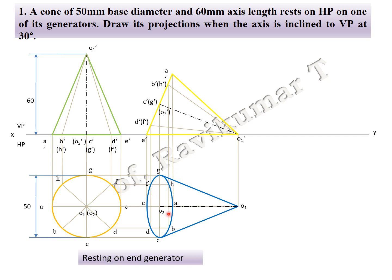For the third position, since the word 'appear' is absent in the problem, it is a locus problem — similar to the slant triangle face and slant edge problem. The axis is inclined at 30 degrees. Since it is a locus problem, we find the true length and apparent length. True length is always from the first position and apparent length is always from the second position. So 60 mm is the true length and O2 to O1 is the apparent length. We take the inclination with VP.